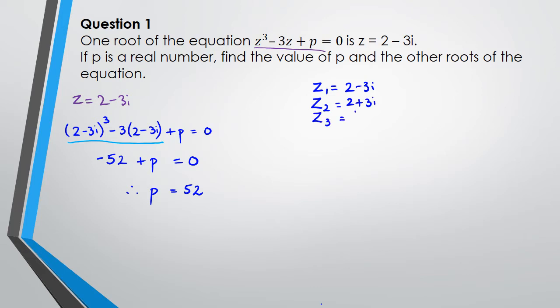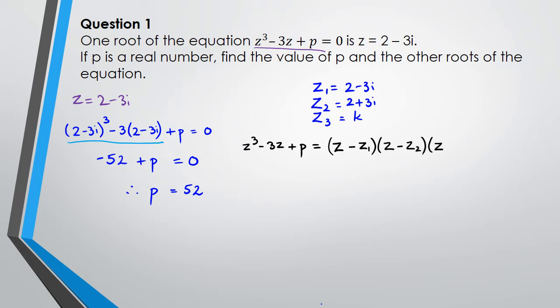Now we need to figure out the third root, which I'll call k. If I write this as an equation: z³ - 3z + p equals (z minus root 1)(z minus root 2)(z minus root 3).